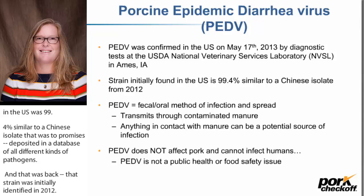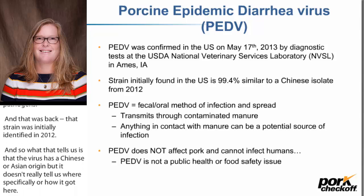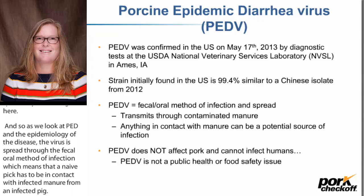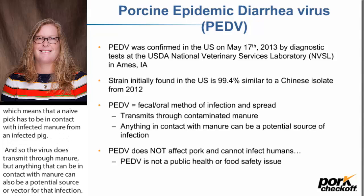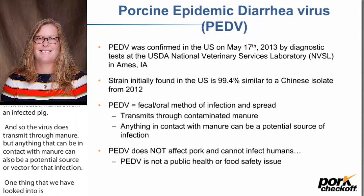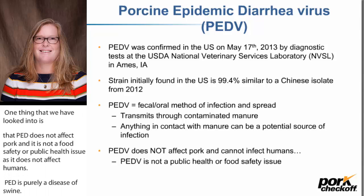As we look at PED and the epidemiology of the disease, the virus is spread through the fecal-oral method of infection, which means a naive pig has to be in contact with infected manure from an infected pig. Anything that can be in contact with manure can also be a potential vector for that infection. PED does not affect pork and is not a food safety or public health issue, as it does not infect humans. It is purely a disease of swine, and all pigs within the United States, when we first identified it, were naive to the virus.